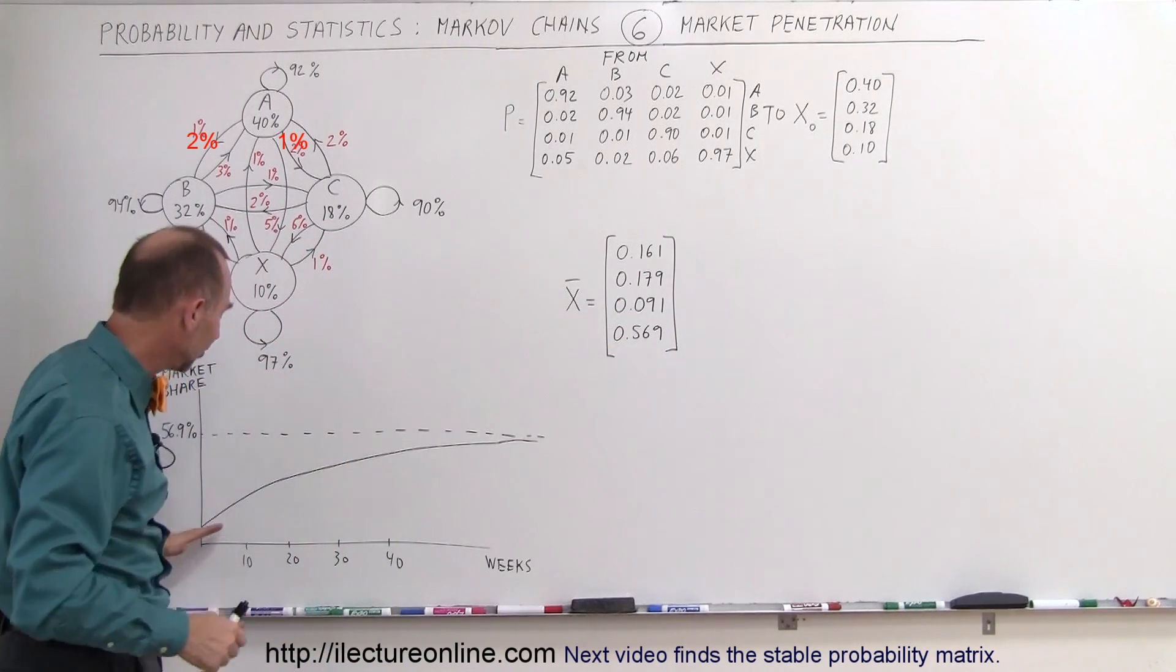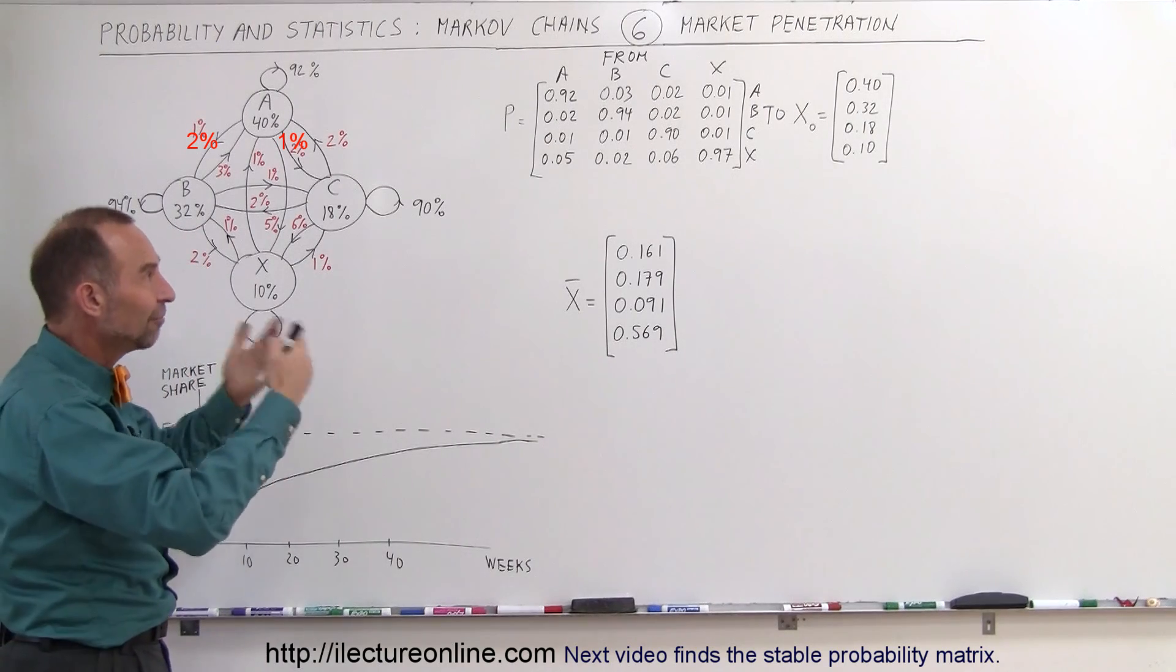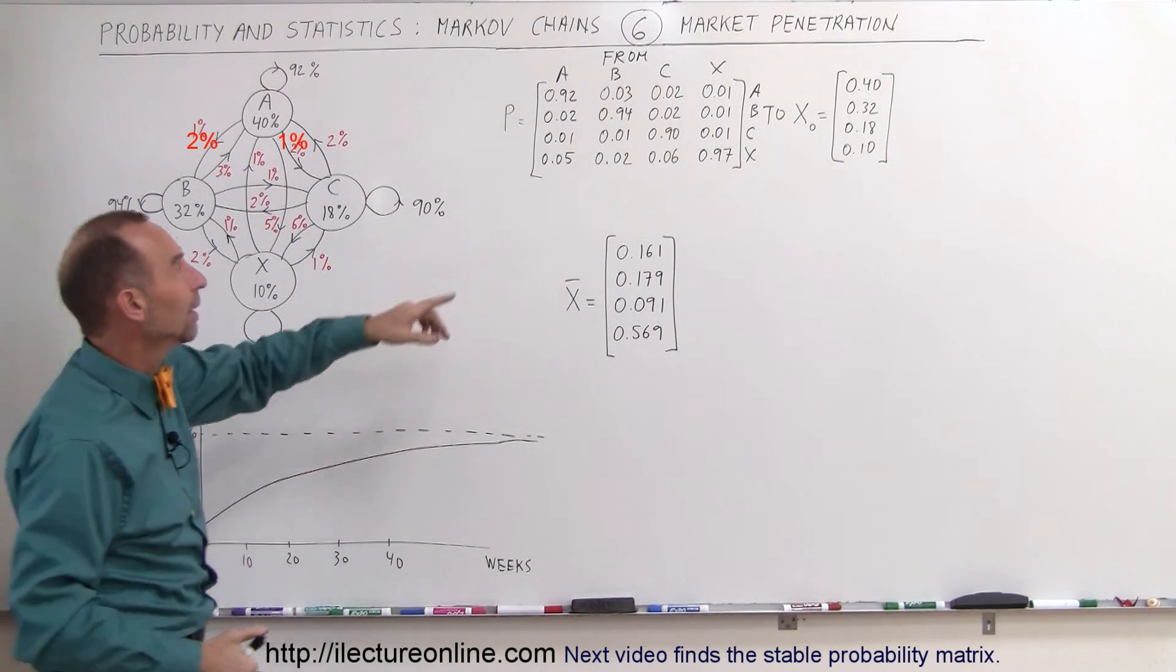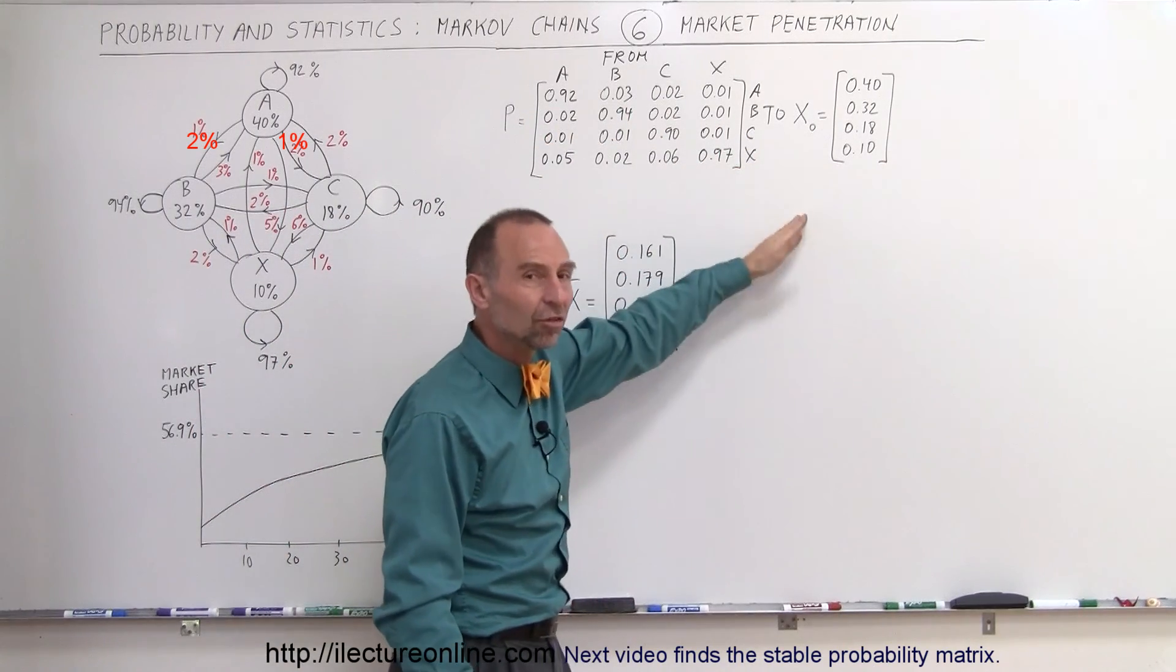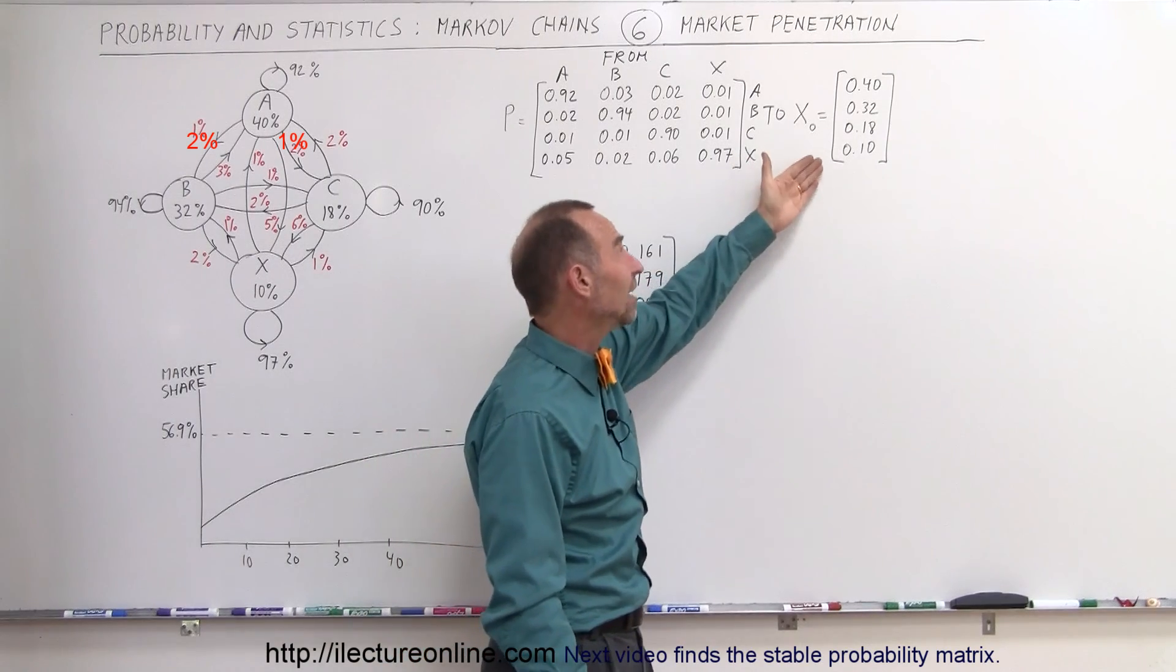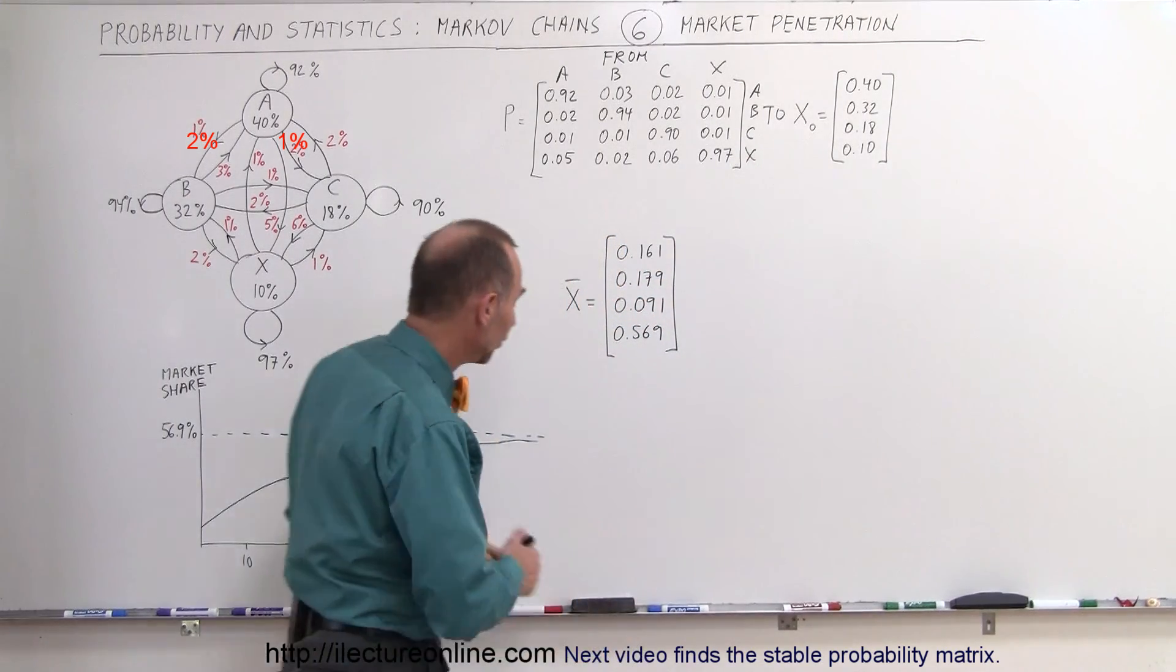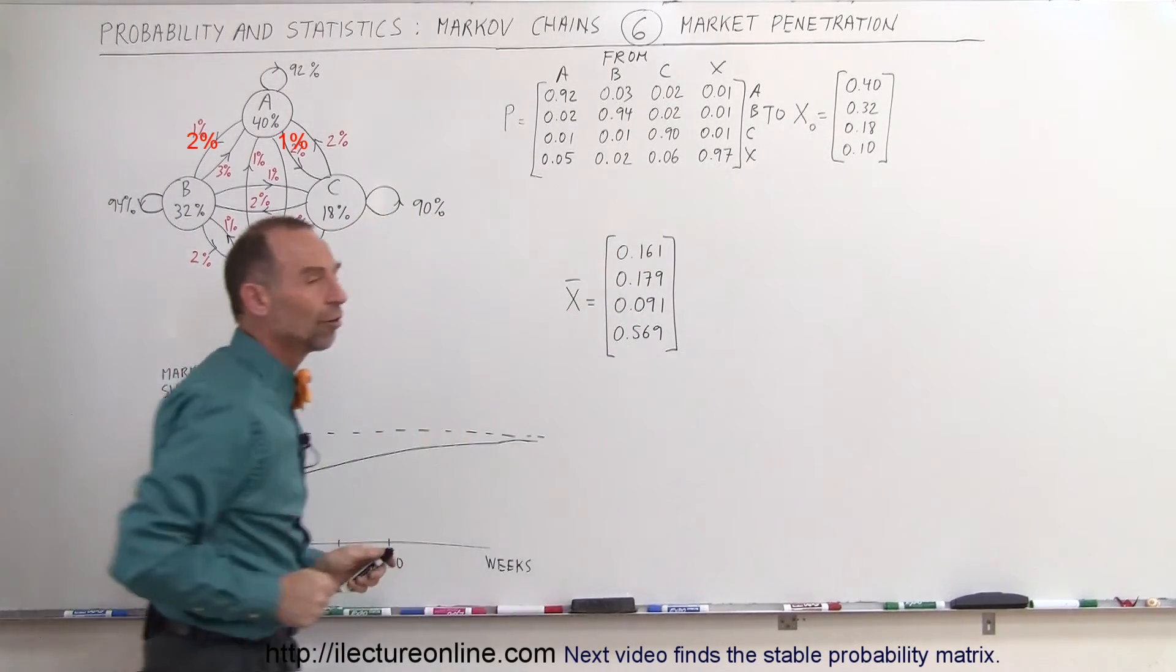You can see that this is something that would happen over time, which would be numerically visible if we were to multiply the probability matrix times the initial condition, then times condition 1, condition 2, condition 3—or we call them states. So state 0, state 1, state 2, state 3, state 4, all the way until we have an equilibrium state where this will be the new distribution of product.